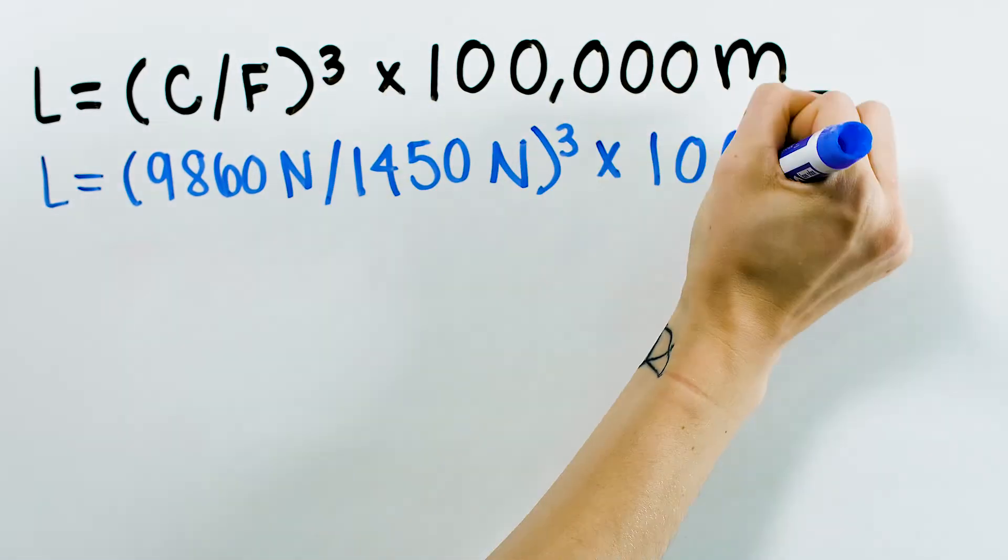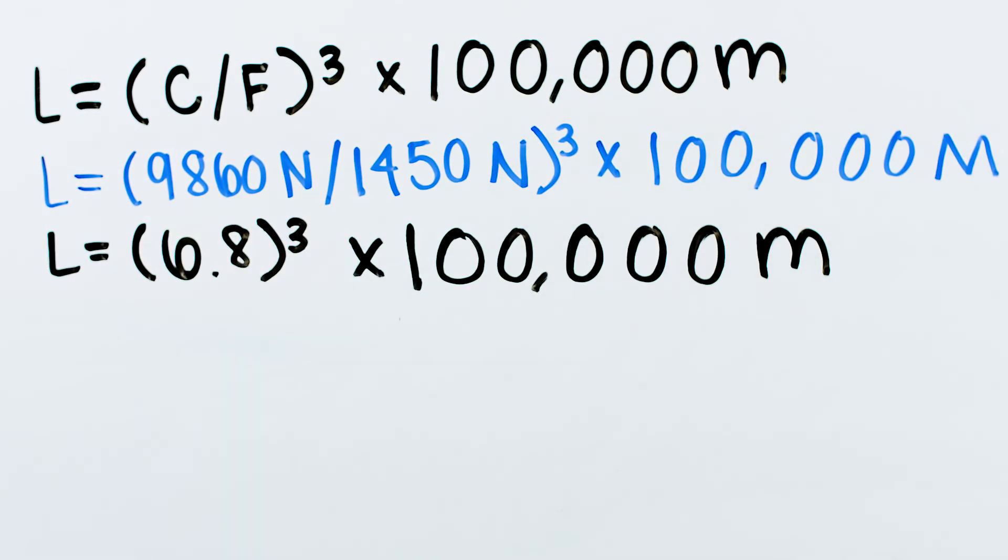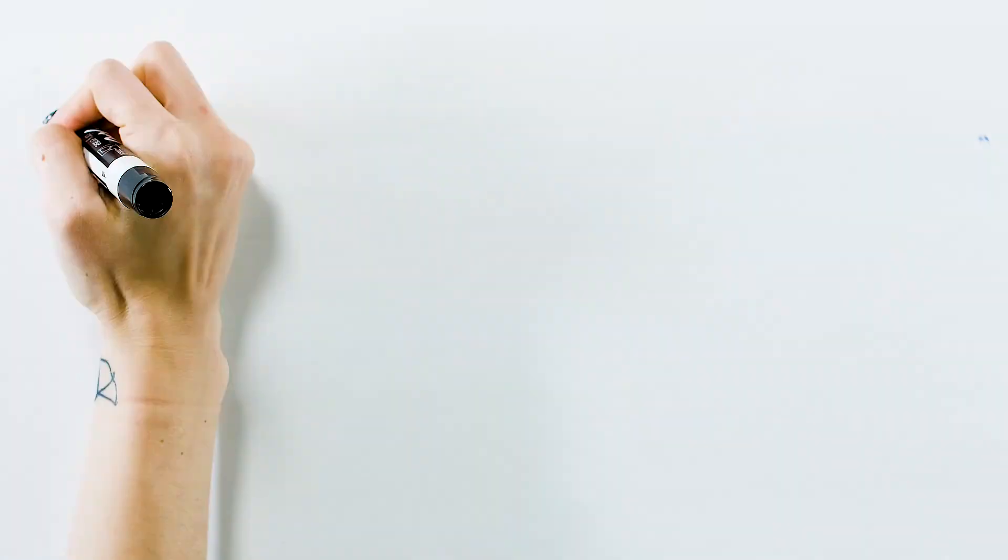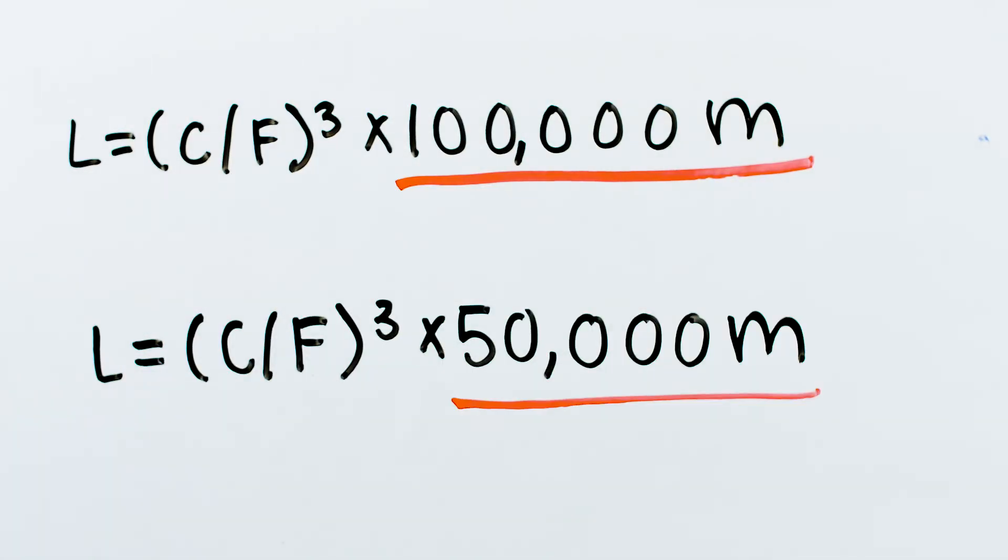So with the dynamic load capacity C and the applied load F, we can easily determine the bearing's L10 life. Notice that the life is multiplied by 100,000 meters or 100 kilometers. Some manufacturers use 50,000 meters or 50 kilometers as the basis for bearing life.